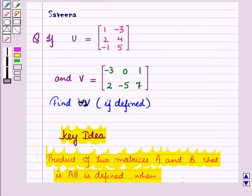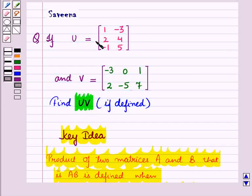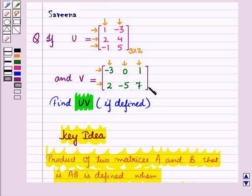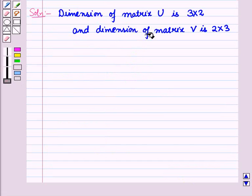Now let us start with the solution of the given question. Here we have to find the product UV if defined. Matrix U has 3 rows and 2 columns, so the dimension of this matrix is 3 cross 2. And matrix V has 2 rows and 3 columns, so the dimension of this matrix is 2 cross 3. Therefore, the number of columns of matrix U is equal to the number of rows of matrix V.